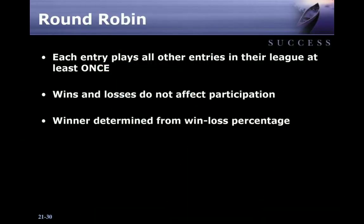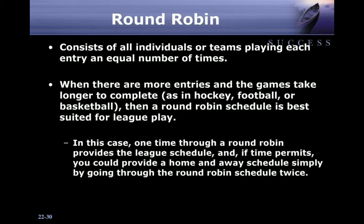Round Robin: each entry plays all other entries in their league at least once. Wins and losses do not affect participation. Winners are determined from win or loss percentage. Round Robin consists of all individuals or teams playing each entry an equal number of times. When there are more entries and games take longer to complete — as in hockey, football, or basketball — a Round Robin schedule is best suited for league play. In this case, one time through a Round Robin provides the league schedule.